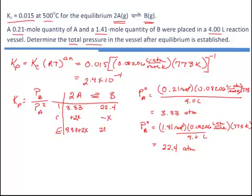So at equilibrium, we'll have 3.33 plus 2x, and we'll have 22.4 minus x. Now we set up this expression so that we can plug these values into our Kp expression. We have 2.4 times 10 to the minus 4 equals the pressure of B, which is 22.4 minus x, over the pressure of A squared, which would be 3.33 plus 2x quantity squared.